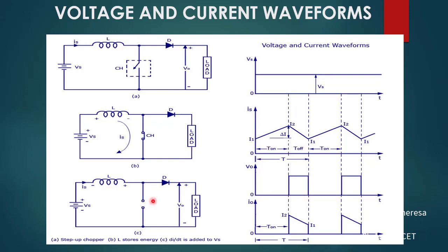When the switch is open, during the OFF time, the current stored in the inductor will be discharged. The energy stored in the inductor is discharged through the diode and the load. So during the turn OFF time, the inductor discharges its energy. We get output voltage and output current during this period. The inductor current decreases from i2 to i1 due to the gradual discharging of the inductance.